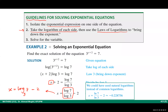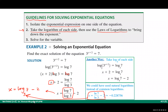It is also possible to take ln of both sides instead of log. If you do that, you will get the solution in a similar form, which can again be written using the change of base formula. However, I prefer taking the logarithm with the same base as the exponential — here base 3. Taking log base 3 of both sides lets you use the cancellation property, giving x + 2 equals log base 3 of 7, so x equals log base 3 of 7 minus 2. Whatever logarithm you use, the solution is unique.